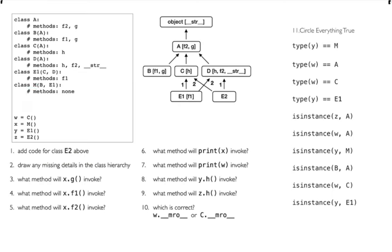We have to have a class E2. Its favorite parent is D — arrow 1 goes to D — and then its second favorite parent is C. So basically the exact opposite of E1. Its favorite parent is D and its second favorite is C. And it has no methods.